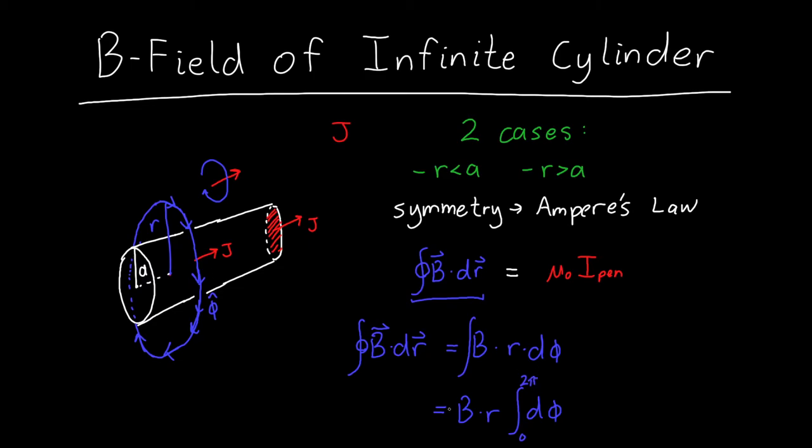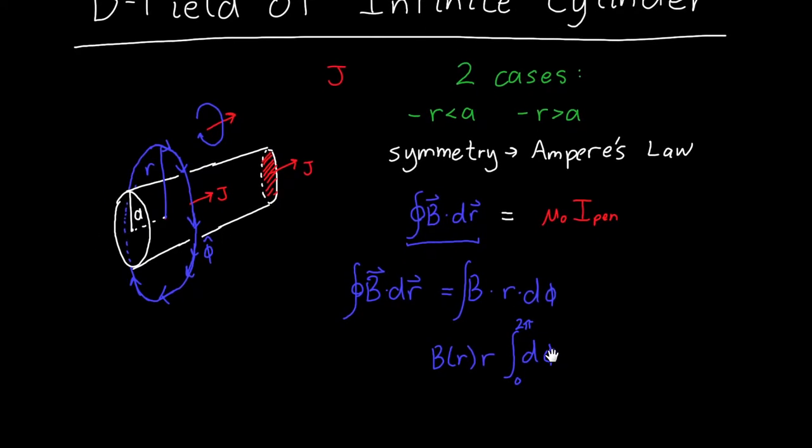And I should also note that B might be a function of r, but because r is constant along this integral, B is also going to be constant. And so if we actually carry out this integral, we'll get that this is equal to B of r times r times 2 pi.